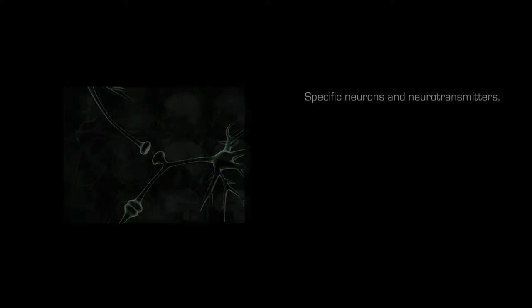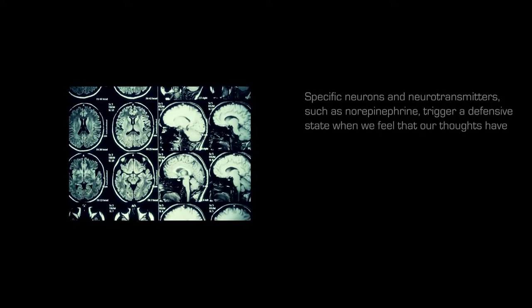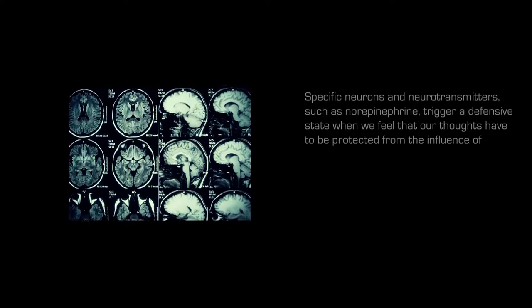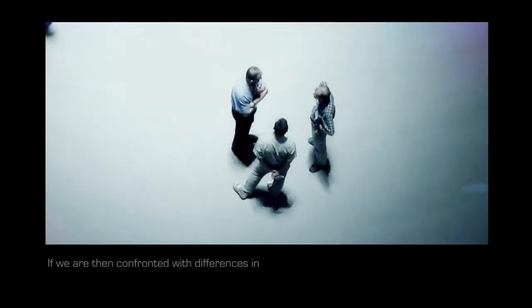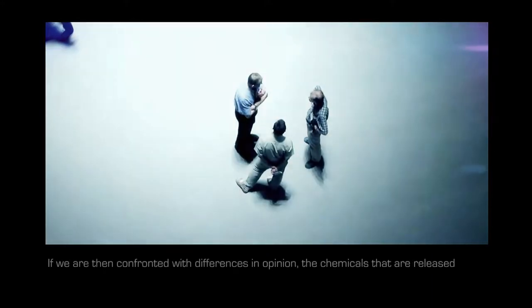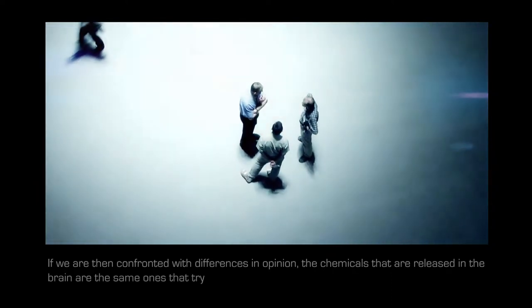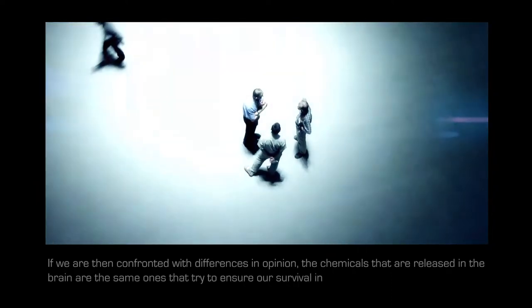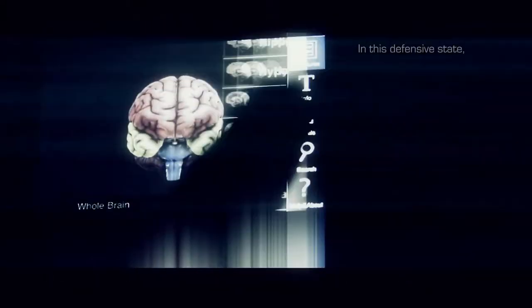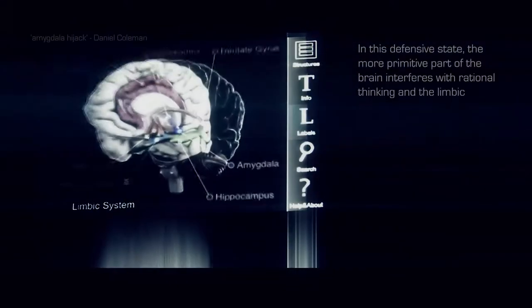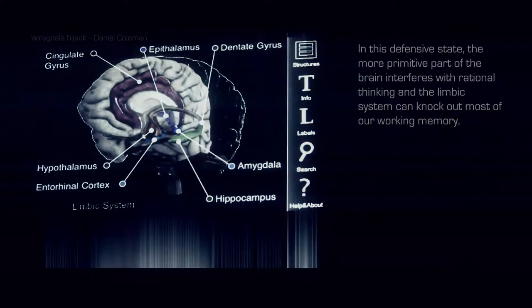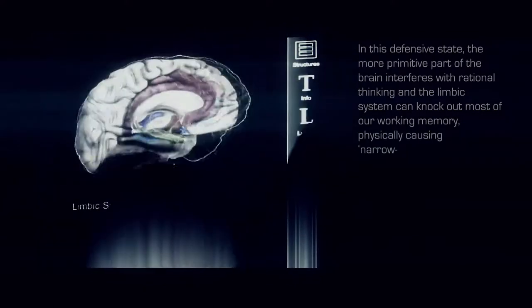Specific neurons and neurotransmitters, such as norepinephrine, trigger a defensive state when we feel that our thoughts have to be protected from the influence of others. If we are confronted with differences in opinion, the chemicals that are released in the brain are the same ones that try to ensure our survival in dangerous situations. In this defensive state, the more primitive part of the brain interferes with rational thinking and the limbic system can knock out most of our working memory, physically causing narrow-mindedness.